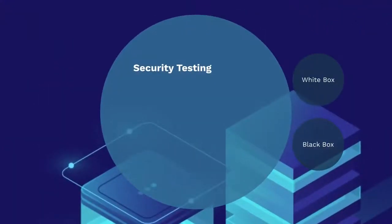Security testing must focus on the structure of the code as well as the data sources of a software application. White and black box testing are two commonly used approaches that can help uncover weaknesses in an application. Gray box testing is a combination of both these approaches, which can help to mitigate the risks from potentially exploitable vulnerabilities.